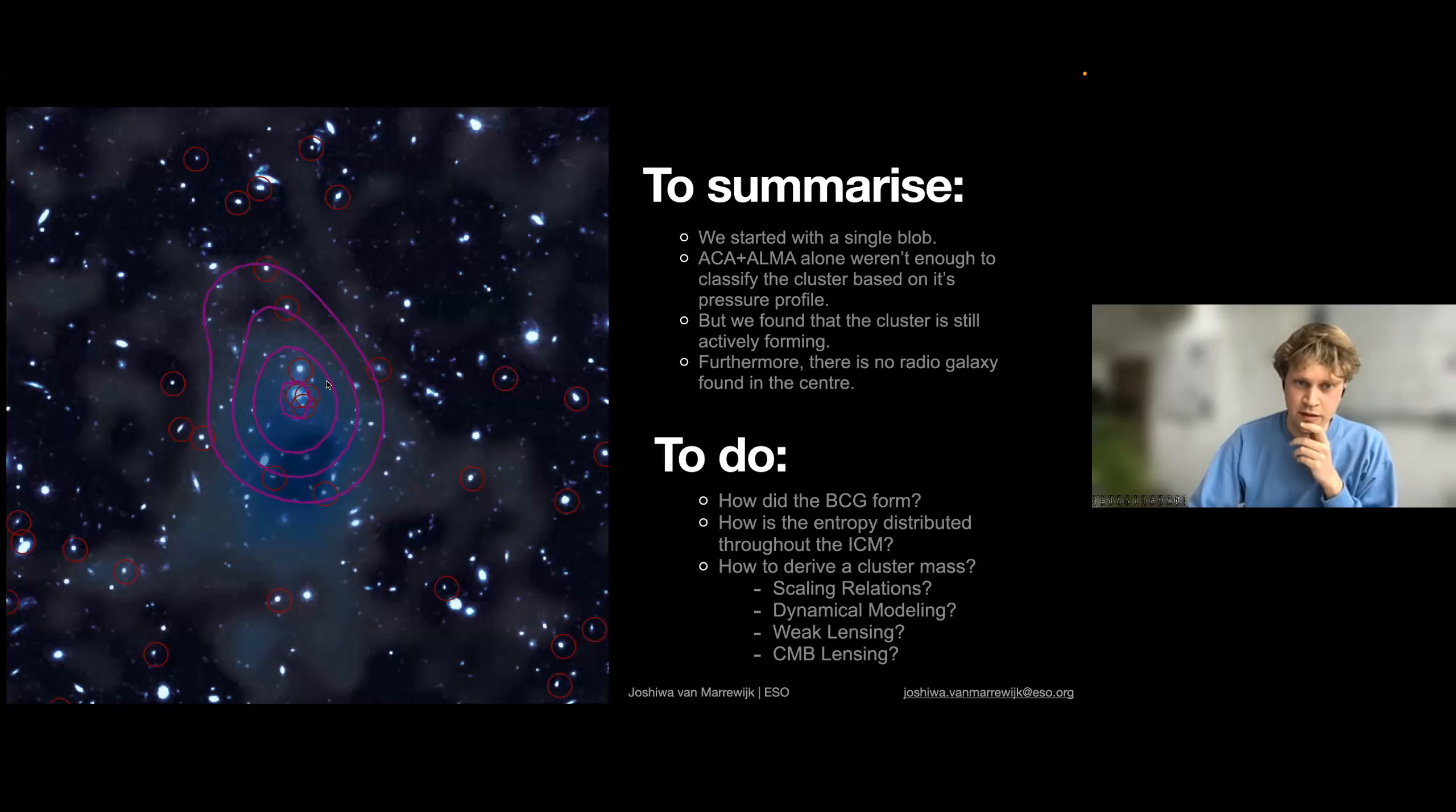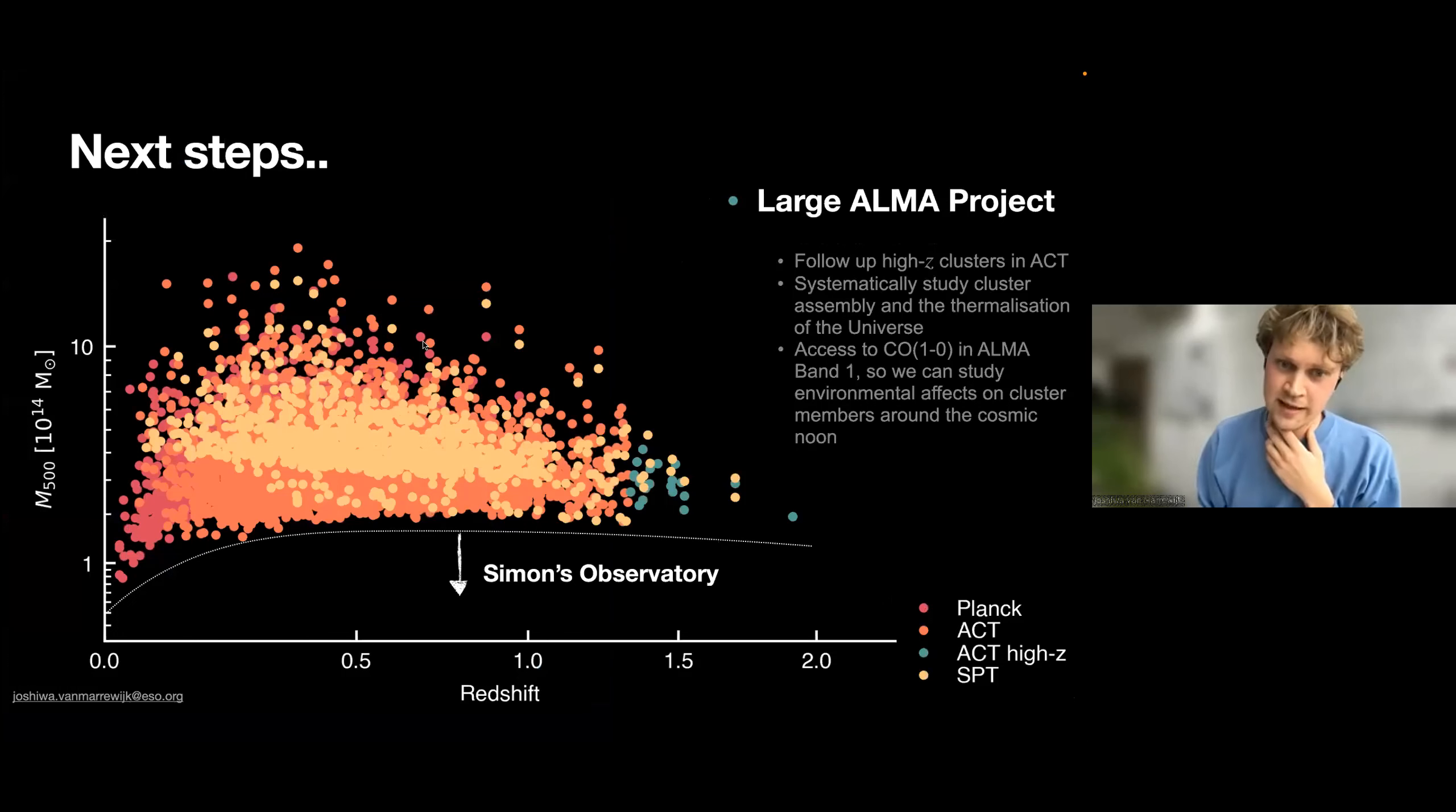As this work is still in progress, we're still working on some things. We want to see how this BCG is forming. I think the intercluster light can tell us something there. Also, we want to know what the entropy of the gas is doing. If you combine X-ray density measurements and pressure measurements, you can get the entropy. So you can see if the cluster, the BCG, is forming by precipitation or by forming with mergers. More importantly, we want to know what the cluster mass is doing. You can't use scaling relations from local observations. You can use dynamical modeling from the cluster members. But I think more interesting is that James Webb can do weak lensing up to redshift 2. Or maybe even in the future, we can lens the CMB.